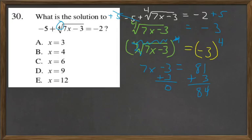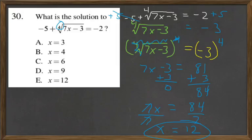So 7x equals 84, and then 84 divided by 7 equals 12. Our answer is E.